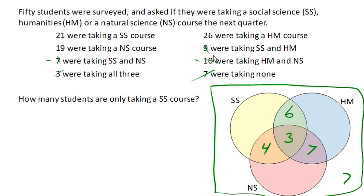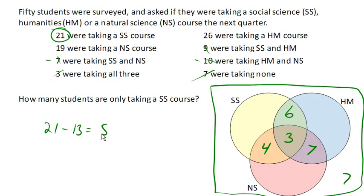We had 21 students taking a social science class. Six and four is ten, plus three more is 13 students already accounted for. So 21 minus those 13 students leaves us with eight students for this region here. That lets us answer our question: there are eight students taking only a social science class.